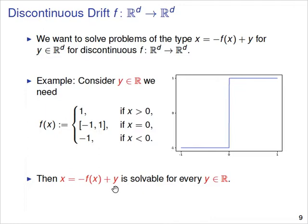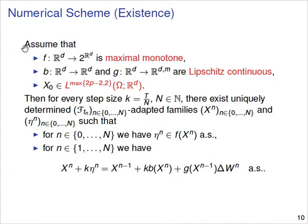More generally, this type of equation is solvable if f is a maximal monotone operator, b and g are Lipschitz, and we have an integrable initial condition. Then for every step size, we get ft_n-adapted families x_n and η_n such that η is always in f of x_n, and x_n and η_n fulfill the scheme equation. This solvability follows by applying the Browder-Minty theorem for maximal monotone operators.